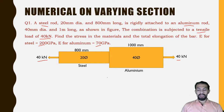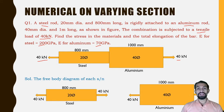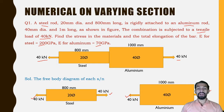The free body diagram of each section is to be drawn. We consider steel as one part and aluminium as one part. The force of 40 kilo newton acts away from each member on both ends — equal and opposite in direction. This applies to both the steel section and the aluminium section. Since the 40 kilo newton forces are equal and opposite, there is no net difference at the joint between the aluminium and steel member.